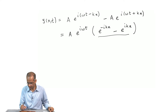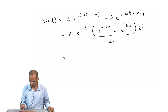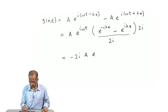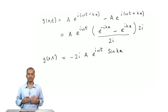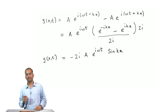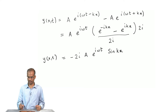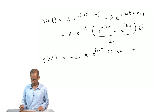Dividing and multiplying by 2i, this quantity simplifies to −2ia·e^(iωt)·sin(kx). This is the solution that respects the boundary condition at x = 0, since putting x = 0 gives sin(0) = 0, so y = 0 as required.